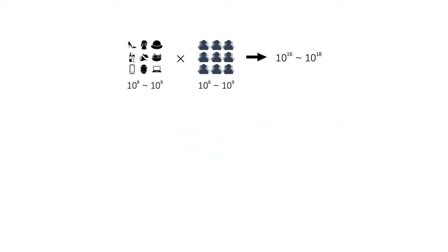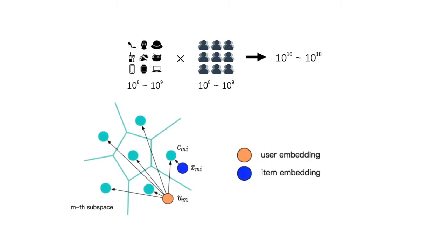To overcome the calculation barriers, models such as matrix factorization resort to inner product form and indexes to facilitate efficient approximate nearest neighbor search. But it still remains challenging to incorporate more expressive interaction forms between user and item features, such as deep neural networks.